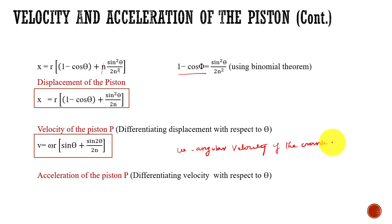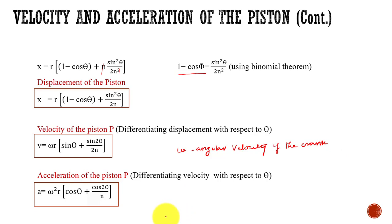The acceleration of the piston is found by differentiating the velocity equation with respect to θ. This gives the acceleration equation: a = ω²R(cos θ + cos 2θ / N). These three relations — displacement, velocity, and acceleration of the piston — are essential when solving problems, because our ultimate aim is to find the inertia forces acting on the piston using F = ma. With this, I am concluding today's lecture.